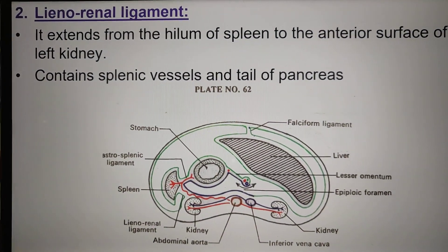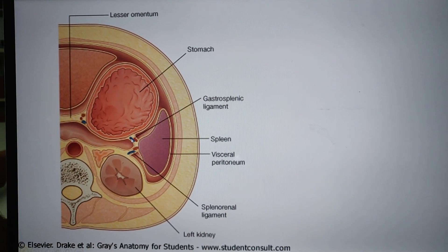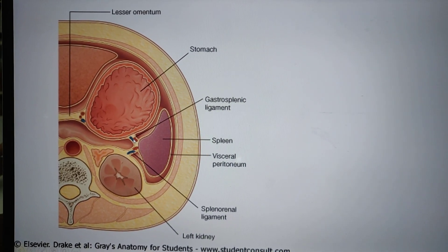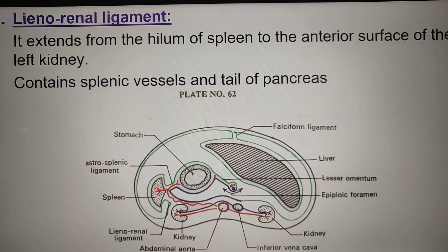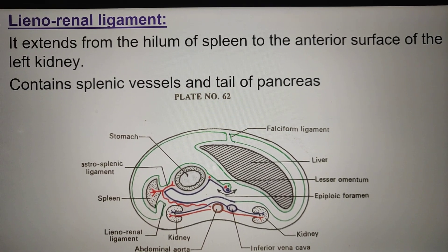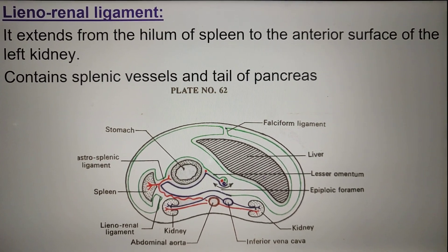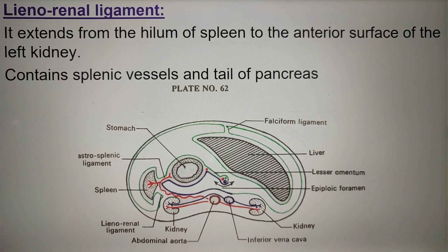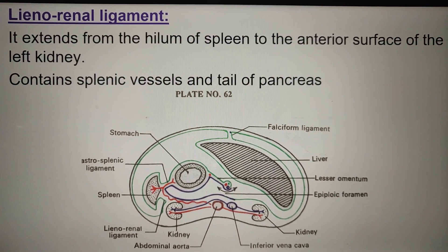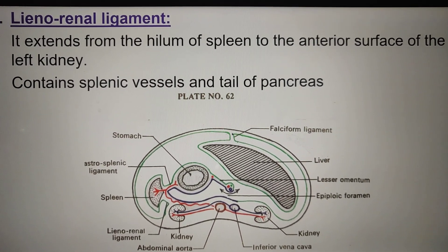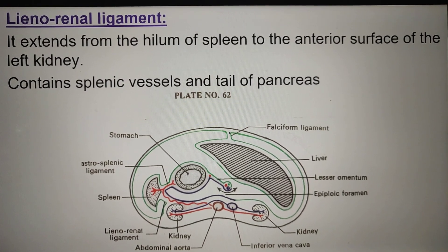The gastrosplenic ligament contains the short gastric vessels. The lienorenal ligament extends from the hilum of the spleen to the anterior surface of the left kidney. It contains the splenic vessels and the tail of the pancreas. During splenectomy, precaution must be taken regarding the tail of the pancreas, as it contains abundant Langerhans cells which control blood glucose level by secreting insulin and glucagon.